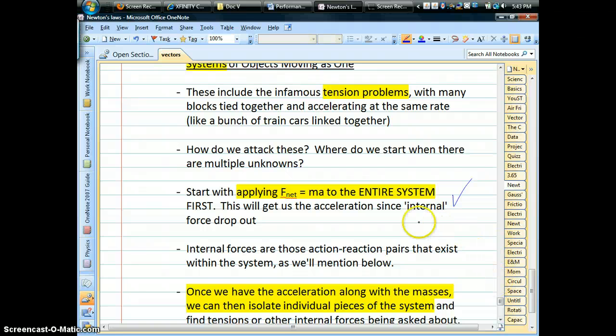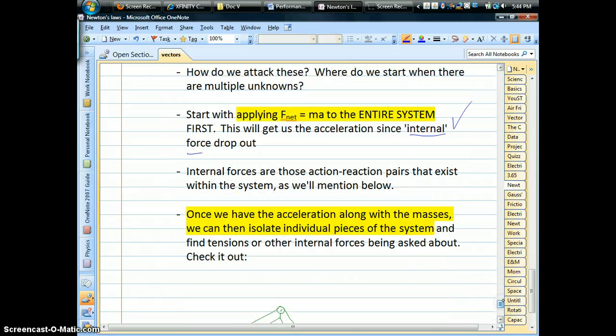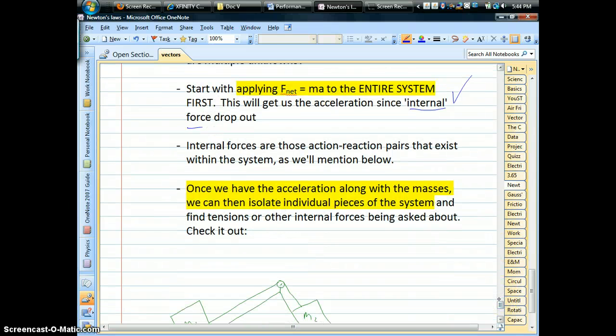And there's a big advantage to this because what I like to call the internal forces of the system drop out. These are the action-reaction pairs that we'll find, as we'll demonstrate in just a minute. Basically, by looking at the entire system it's going to allow us to figure out what the acceleration is for all the blocks. And once you have masses and accelerations, then you can apply F equals ma to individual pieces and figure out whatever's left in the problem.